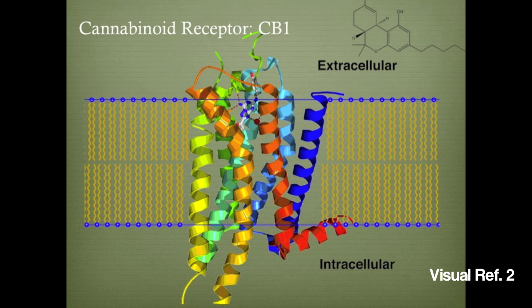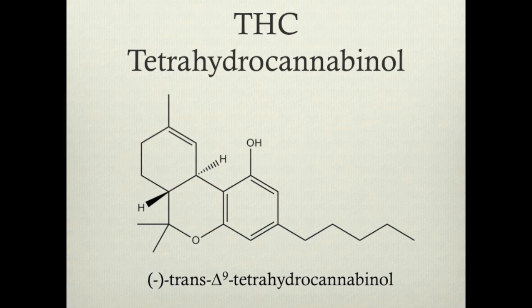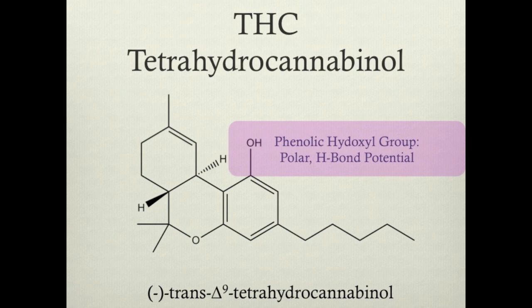Tetrahydrocannabinol has the ability to act as an agonist to these cannabinoid receptors and initiates a signaling cascade. Let's take a close look at the Lewis structure of THC. Tetrahydrocannabinol contains a polar phenolic hydroxyl group capable of forming a hydrogen bond with the receptor. THC also contains an alkyl tail — a hydrophobic substituent that can associate with the hydrophobic residues on the receptor.